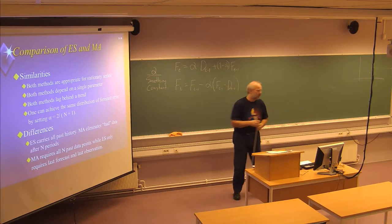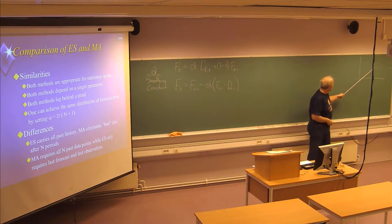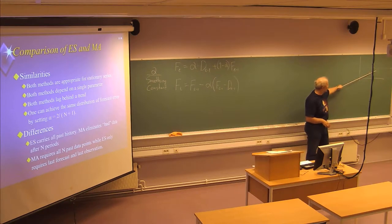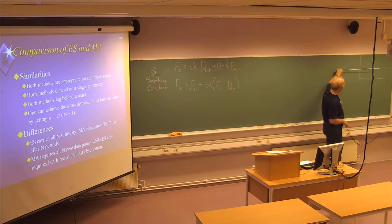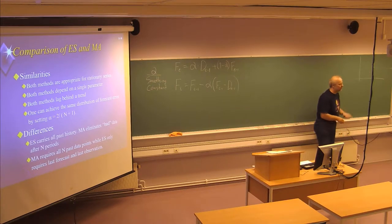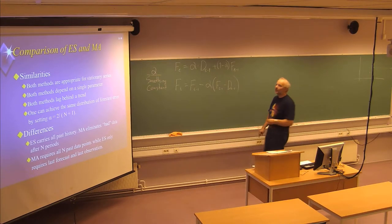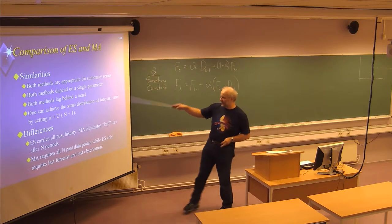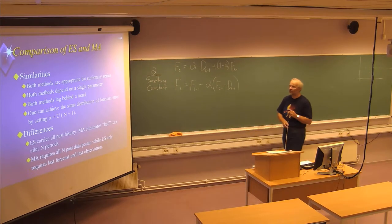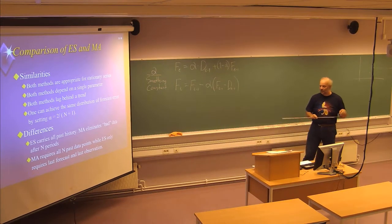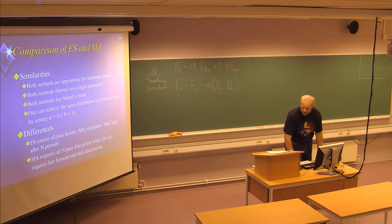When you update the methods and get data points which are over or eventually below the forecast, you will have to adjust the forecast. So if you get a new data point which is higher than the forecast, this line will be adjusted, and the same when you get lower data points.